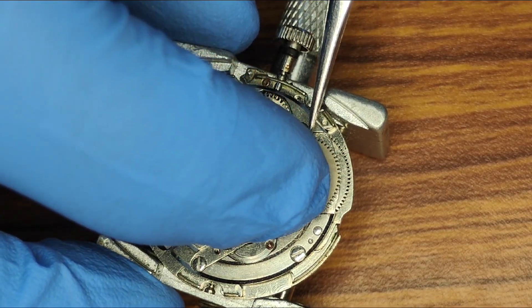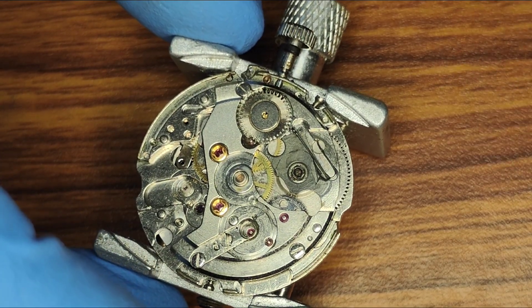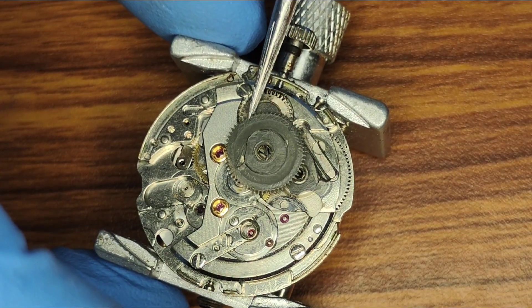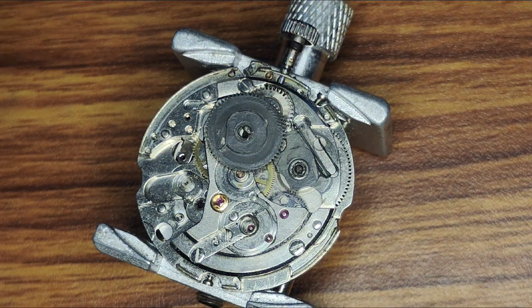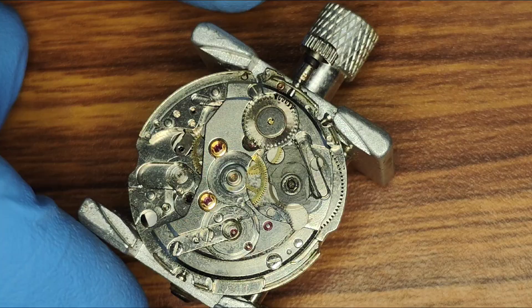This is the ratchet wheel and below it there will be the ratchet wheel click spring. The train wheel bridge has three screws.